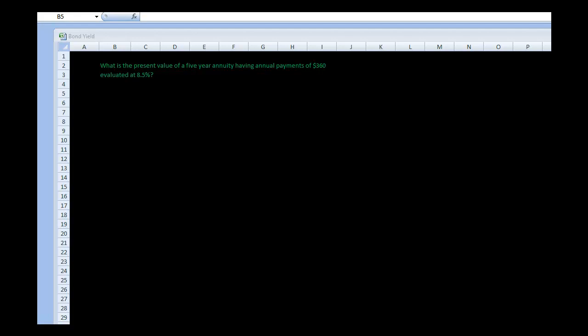And so, I want to first explain to you what is an annuity. An annuity is a series of equal payments for a specified period of time. And if you look at this problem, it says, what is the present value of a five-year annuity having annual payments of $360 evaluated at 8.5%? So we have an annuity by definition. We have annual payments that are equal, and they're for a specified amount of time, which is five years. And that's significant because any time that there's an annuity, there's a little bit of a shortcut in solving an annuity problem.